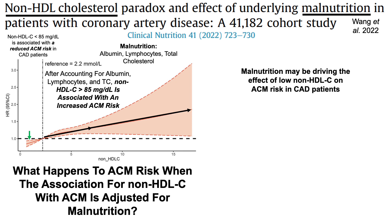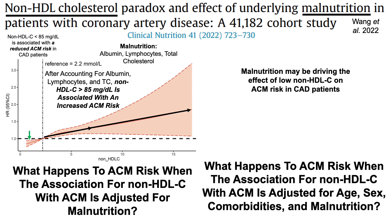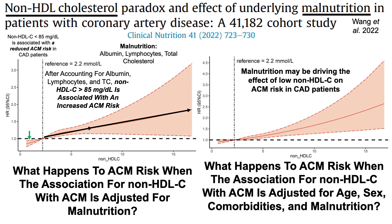Before going forward, it's important to also account for those other factors — age, sex, and comorbidity — in the malnutrition model. The data looks almost essentially the same with some very small changes. Having a non-HDL cholesterol level greater than 85 is still significantly associated with an increased all-cause mortality risk. The non-HDL cholesterol paradox is still reversed: you still see reduced all-cause mortality risk at lower non-HDL-C, though the confidence interval is right at the border of statistical significance at a hazard ratio of one. Malnutrition may be driving the effect of low non-HDL cholesterol on all-cause mortality risk in coronary artery disease patients.